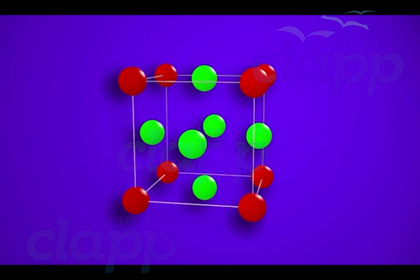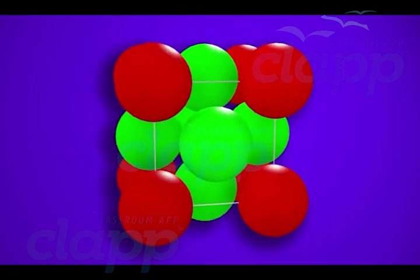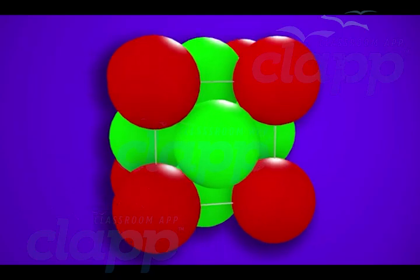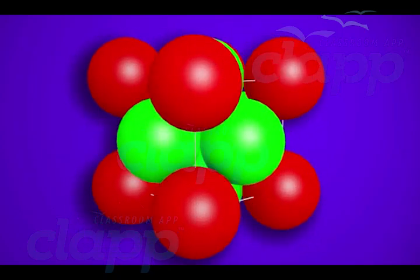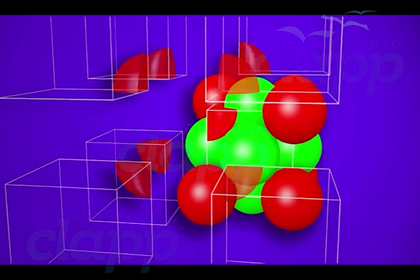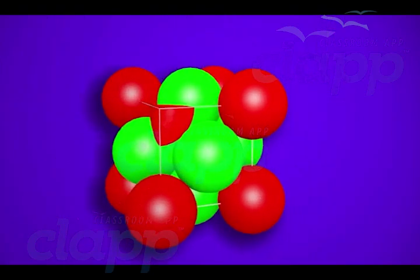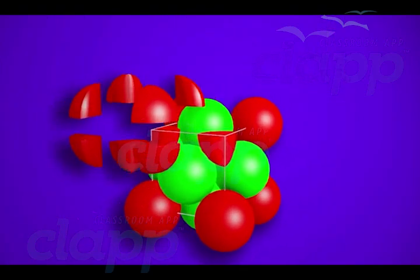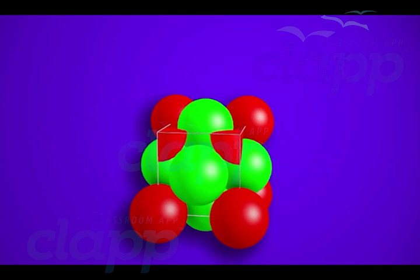A face-centered unit cell contains atoms at all the corners and at the center of all the faces of a cube. Each atom at the corner is shared by 8 adjacent unit cells, so only 1/8th of the atom belongs to 1 unit cell.